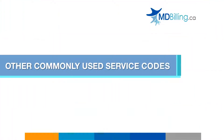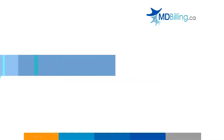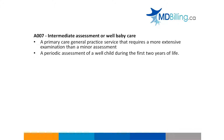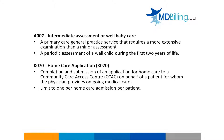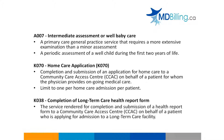Besides the service codes we've mentioned, there are three more commonly used service codes by hospitalists. When a primary care general practice service requires a more extensive examination than a minor assessment, an intermediate assessment A007 can be billed. A007 can also be billed for well baby care, which is a periodic assessment of a well child during the first two years of life. Home care application K070 is the service for completion and submission of an application for home care to a community care access center on behalf of a patient for whom the physician provides ongoing medical care. The limit for K070 is one per home care admission per patient; it is not payable when the patient is already receiving home care. When a health report form is required to submit to a CCAC on behalf of a patient who is applying for admission to a long-term care facility, the service code K038 can be billed for this service.